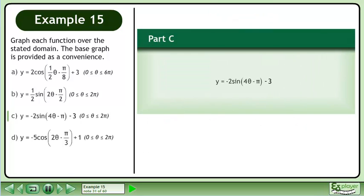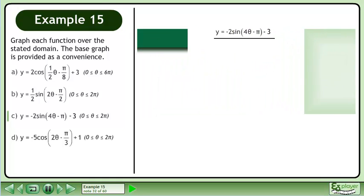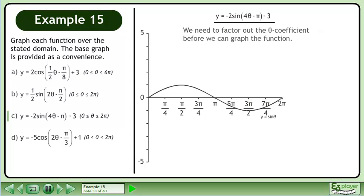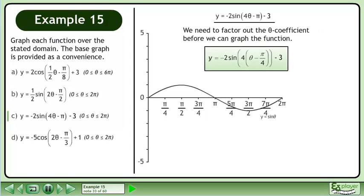In part c, we will draw the graph of y equals -2 sine(4θ - π) - 3. Let's bring up the graph of y equals sine theta. Label the ticks. We need to factor out the theta coefficient before we can graph the function. This gives us y equals -2 sine(4θ - π/4) - 3.